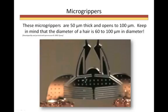Other MEMS devices include these microgrippers or tweezers, which are used in a variety of fields to clasp, pick up, and move micron to nano-sized components. These particular microgrippers are 50 microns or micrometers thick and were developed to pick and place other micro-devices in an automated micro-assembly process. This gripper can open to pick up objects smaller than 100 microns — in other words, objects smaller than a human hair.